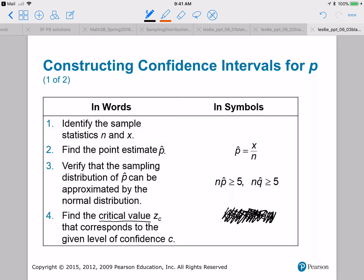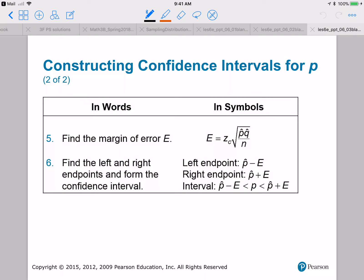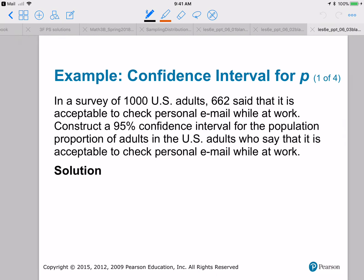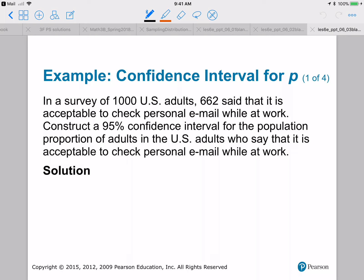Instead of using the table to find critical values, we use the TI-84. First, identify N and X and your point estimate. Then we need to verify that the sampling distribution can be approximated by the normal distribution. The requirements are that N·P-hat and N·Q-hat are both greater than or equal to five. This is similar to when we verified N is greater than or equal to 30. For this video, we're going to focus on using the TI-84.